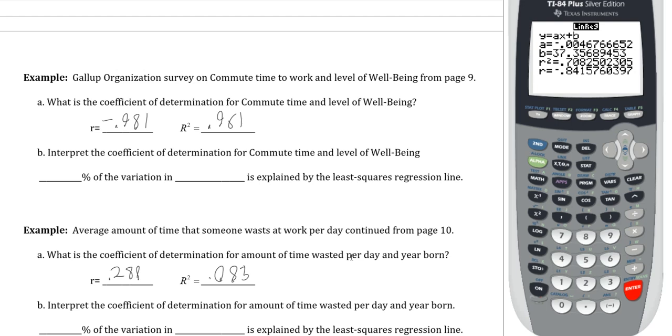Since R² is 0.961, we'd say that's 96.1% of the variation in, again, remember this is supposed to be the y variable. And the y variable here was the well-being score. So 96.1% of the variation in well-being can be explained by the line.